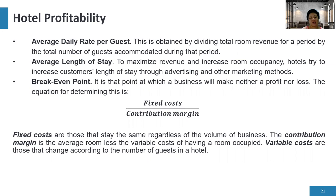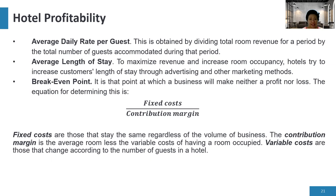Fixed costs are those that stay the same regardless of the volume of business — for example, the rent of the property, which does not change whether you have many guests or none. The contribution margin is the average room rate less the variable cost of having a room occupied.